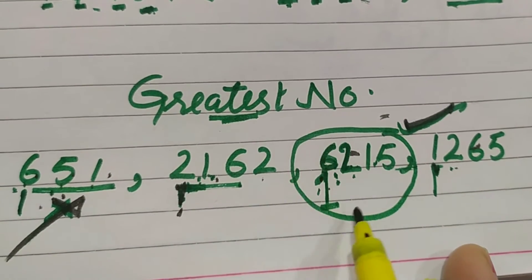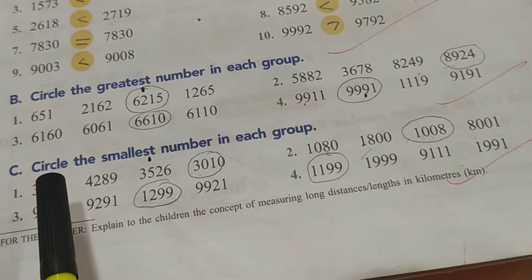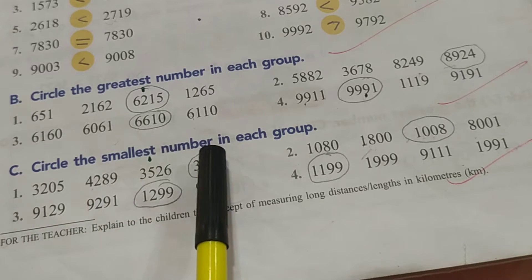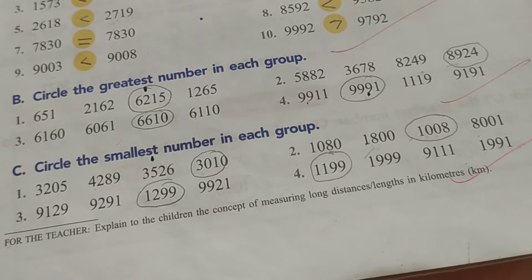Then we will circle this number. C part is circle the smallest number in each group. So here we have the smallest number that we have to circle. So how do we check the smallest number?